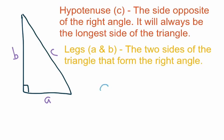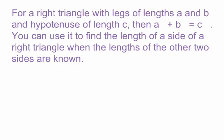The actual Pythagorean Theorem is A squared plus B squared equals C squared. What we're going to do is if we have measurements for two of these three sides, we'll substitute those values in for A, B, and C — whichever two values we know. Then we'll do some algebra in order to find the length of the third variable. For a right triangle with legs of lengths A and B and hypotenuse of length C, A squared plus B squared equals C squared. You can use it to find the length of a side when the other two sides are known.